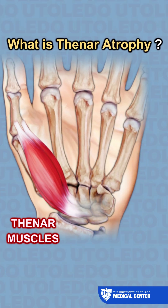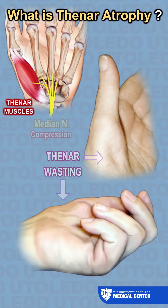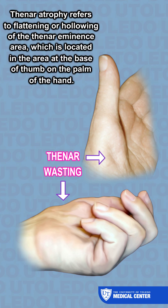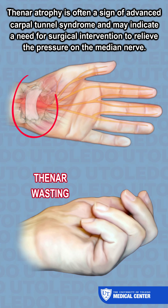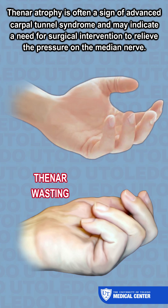What is thenar atrophy? Thenar atrophy refers to flattening or hollowing of the thenar eminence area, which is located at the base of the thumb on the palm of the hand. Thenar atrophy is often a sign of advanced carpal tunnel syndrome and may indicate a need for surgical intervention to relieve the pressure on the median nerve.